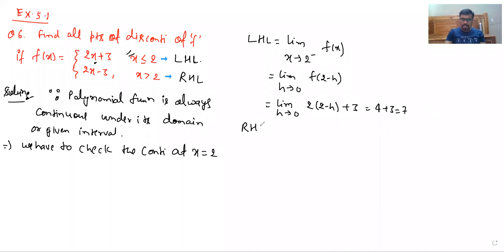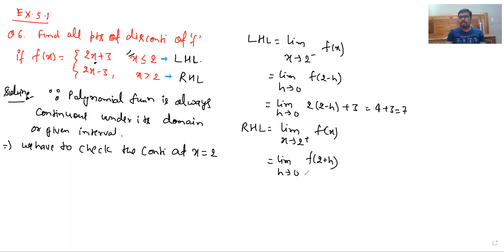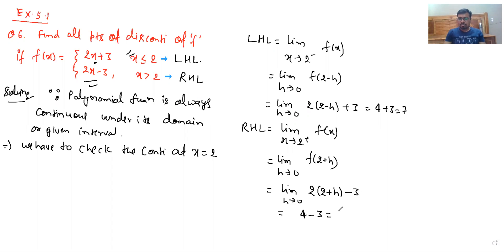Now we find the RHL. RHL equals limit as x tends to 2 plus of f(x), which equals limit h tends to 0 of f(2 plus h). Substituting into the second piece: 2(2 plus h) minus 3, which gives 4 minus 3 equal to 1. So left hand limit is not equal to right hand limit, which means f is discontinuous.